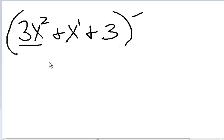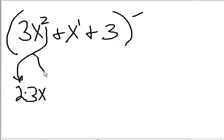Let's start with 3x squared. I'll bring down the two into the front in multiplication. So that means two times three x. What do I do with the exponent? The two, two minus one.